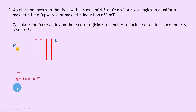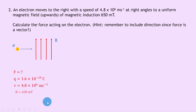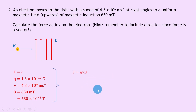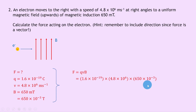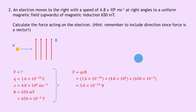Writing down what we know: we're trying to find force f. The charge on the electron is 1.6 times 10 to the minus 19 coulombs. Velocity v is 4.8 times 10 to the 6 meters per second. Magnetic induction b is 650 millitesla, converted to 650 times 10 to the minus 3 tesla. Using f equals qvb and substituting gives 1.6e-19 times 4.8e6 times 650e-3, which equals 5.0 times 10 to the minus 13 newtons.